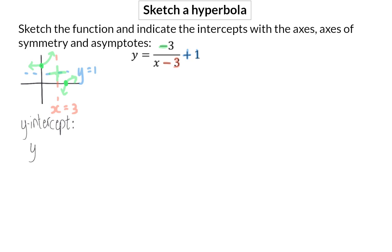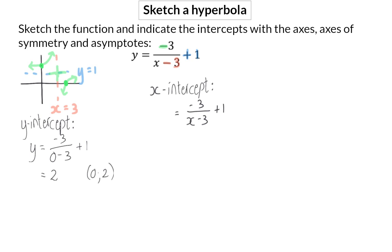For the y-intercept, I substitute x equals 0 into the equation and simplify to get y equals 2, so the y-intercept is at (0, 2). For the x-intercept, I substitute y equals 0 and move the term containing x to the left so that the 3 is positive. I then multiply both sides by the denominator to get 3 equals x minus 3, which means x equals 6. So the x-intercept is at (6, 0).